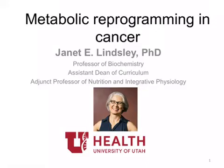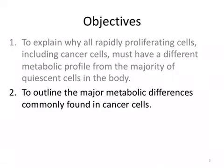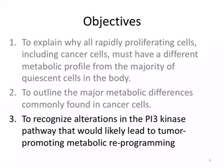Welcome to this mini-lecture on the metabolic reprogramming in cancer. The three objectives are: one, to explain why all rapidly proliferating cells, including cancer cells, must have a different metabolic profile from the majority of quiescent cells in the body; two, to outline the major metabolic differences commonly found in cancer cells; and three, to recognize alterations in the PI3 kinase pathway that would likely lead to tumor-promoting metabolic reprogramming.